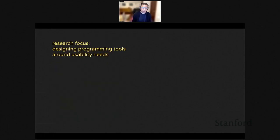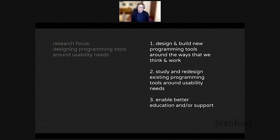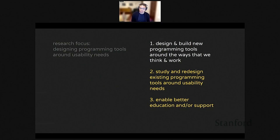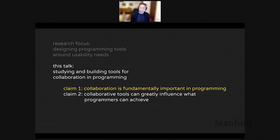I've long been fascinated by treating programming as a human endeavor. The research focus of my group at the University of Michigan has been on designing programming tools around usability needs, and understanding those needs through tool building and studying. Broadly we've taken three approaches: designing new programming languages around how people think and work; studying and redesigning existing programming tools around usability needs; and enabling better education and support in the context of programming. In this talk I'll focus on the second and third approaches, specifically on a thread dealing with studying and building programming tools for collaboration.